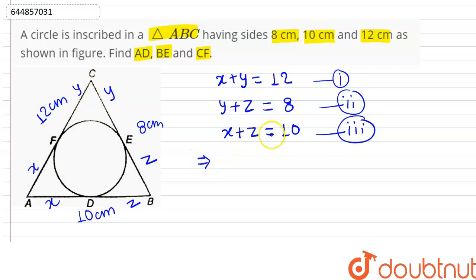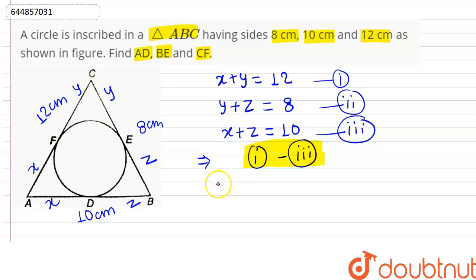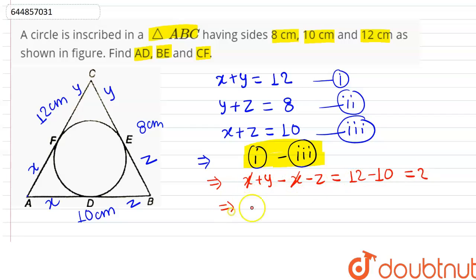Now we perform equation one minus equation three: (X + Y) minus (X + Z) equals 12 minus 10, which equals 2. The X terms cancel out, giving us Y minus Z equals 2 — this is equation four.